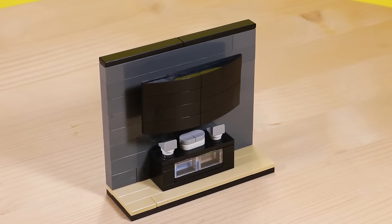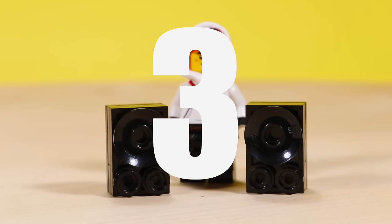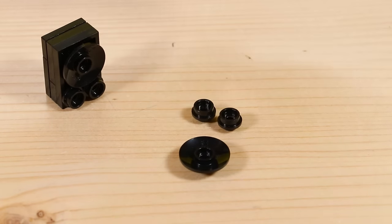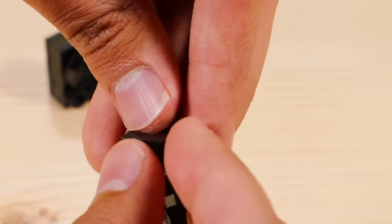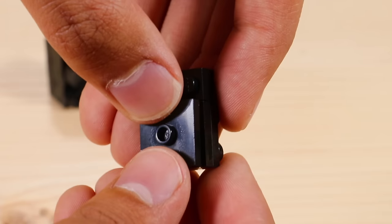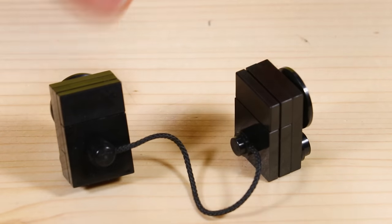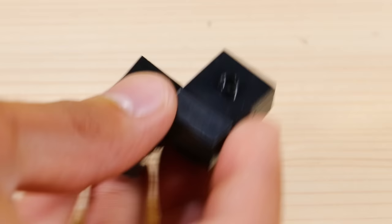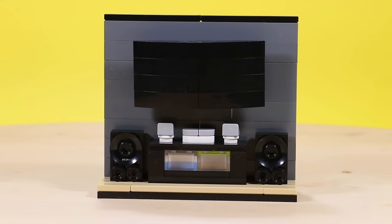But we're forgetting a pretty important part - we need to also throw in some speakers. So to make these, you're going to need a couple of these dish pieces as well as some studs, connect a few plates on the back. And finally, if you want to make it look like a cable is connected to the speaker, take one of these string pieces and connect it to a jumper plate. But come on guys, we're living in the 21st century, baby. Who needs cables when you have Bluetooth? So ditch the cables unless you want to get tripped over.